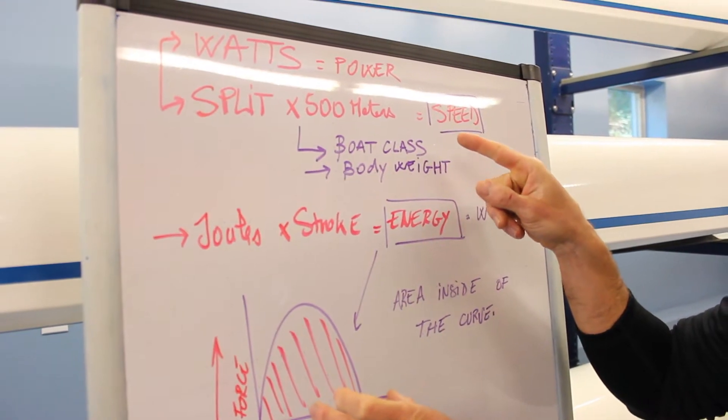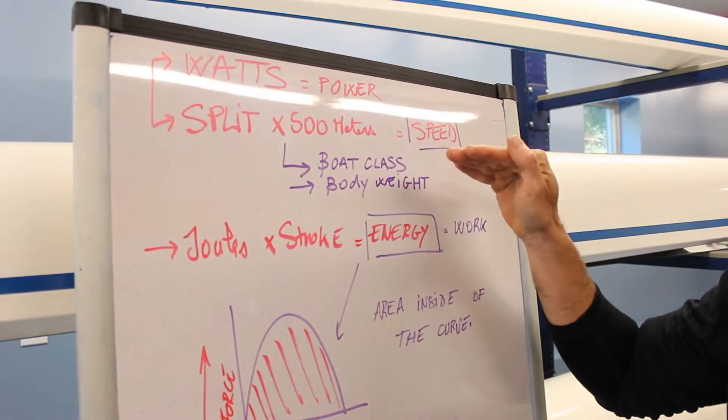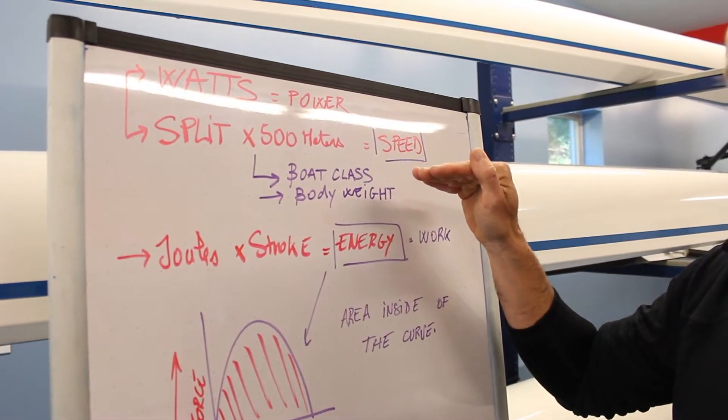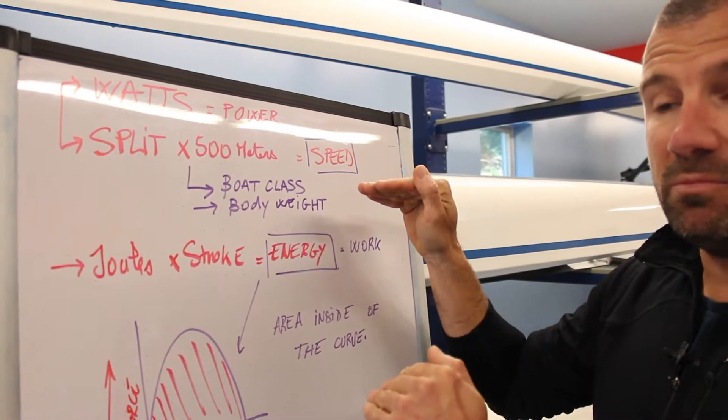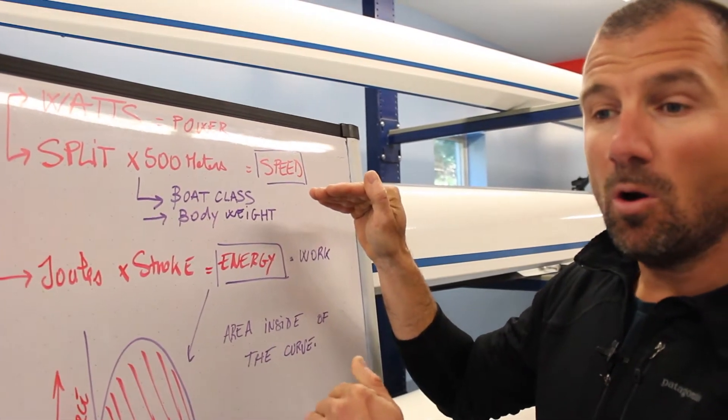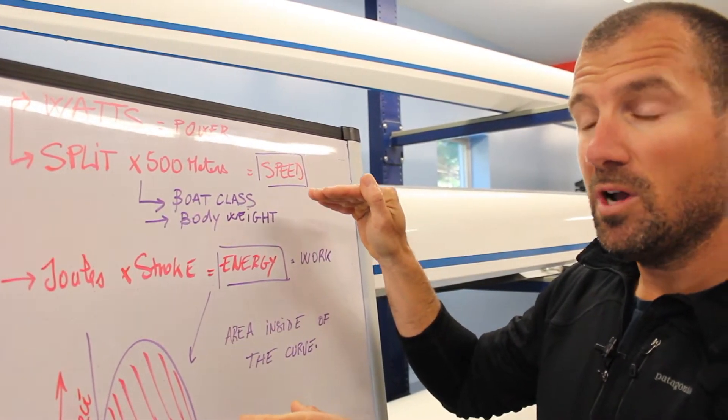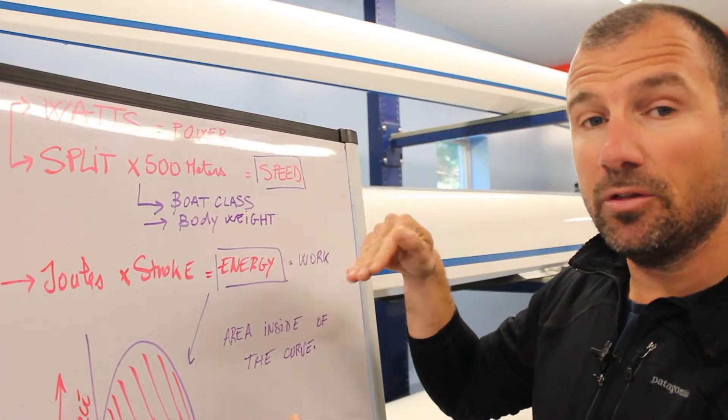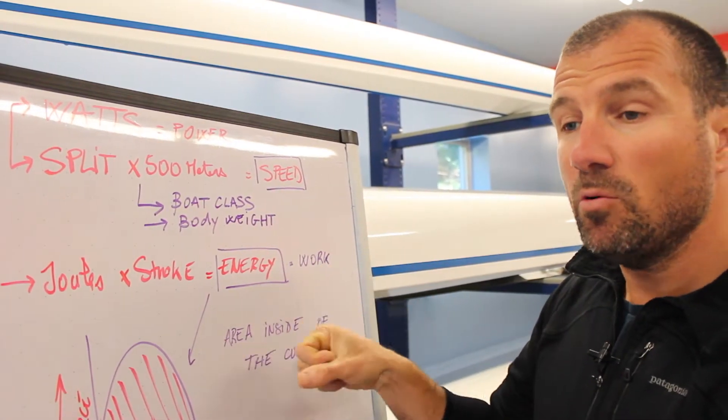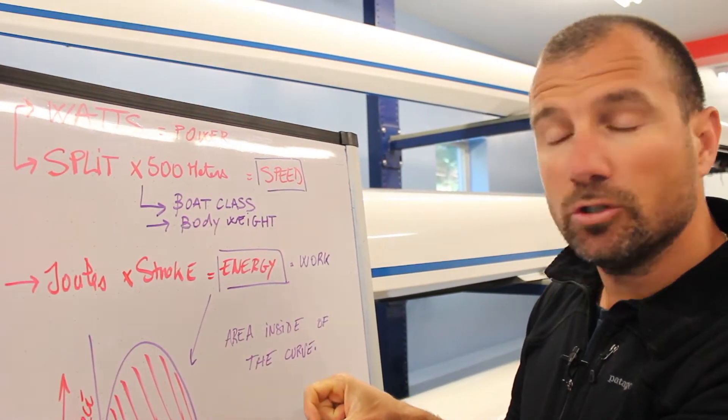To give you an example, we can work at a two minute split, but we can go at 20 strokes a minute with a lot of power, or we can go on a long stroke. Or we can go two minute split rowing at 30 strokes a minute with a very weak power curve and very short power curve.